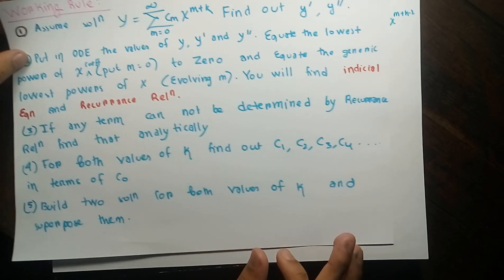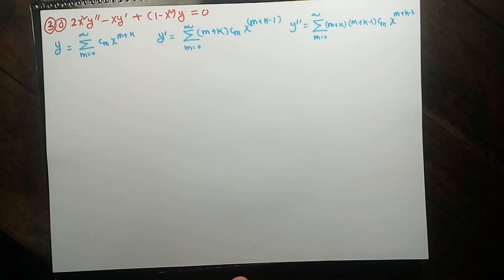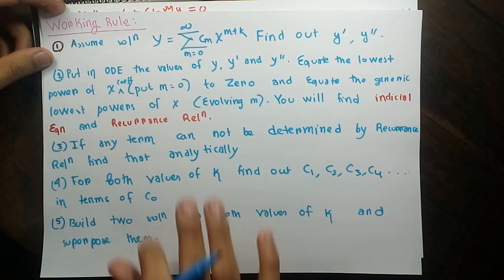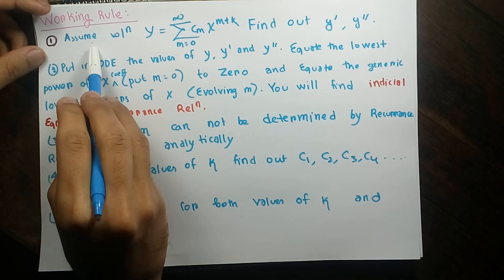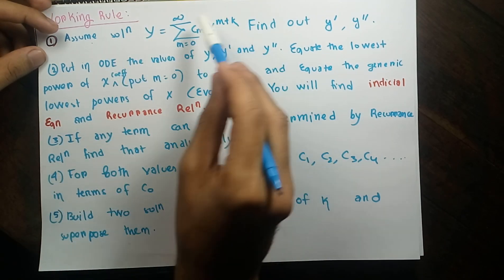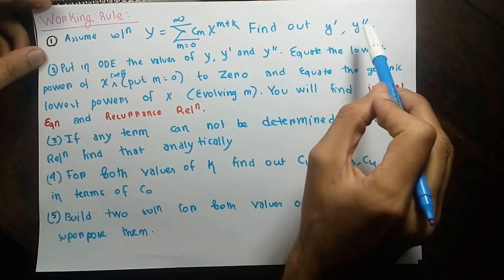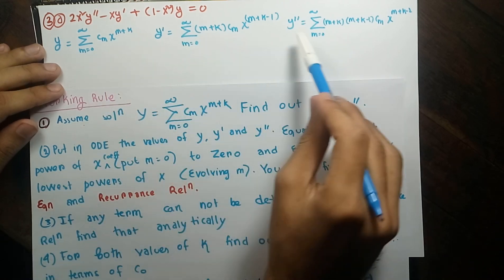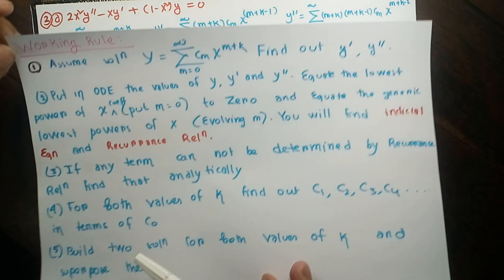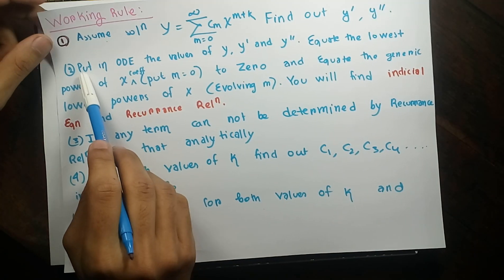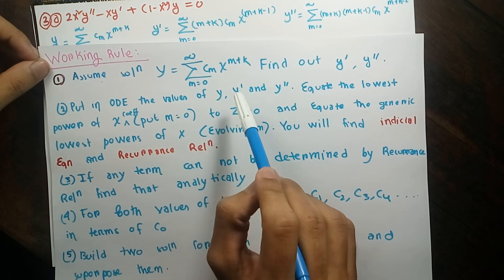In this video I would like to explain the first example of the Frobenius method. Here I have given the working rules for how we can solve Frobenius method problems. The first step is to assume the solution as the Frobenius series — we have seen in the past video why that is a valid approximation. Then find the first derivative and second derivative. The second step says: put y, y', and y'' into the ODE.